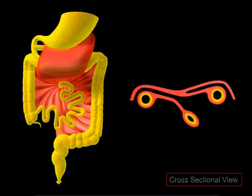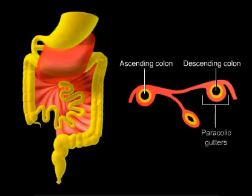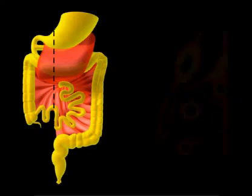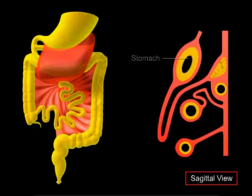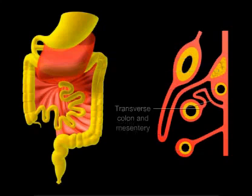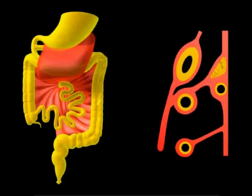The dorsal mesenteries of the ascending and descending colon shorten and fold, anchoring these organs to the dorsal body wall where they become secondarily retroperitoneal. The jejunum, ileum, cecum, and the transverse and sigmoid colon remain suspended by a short mesentery from the dorsal body wall, thus becoming intraperitoneal.